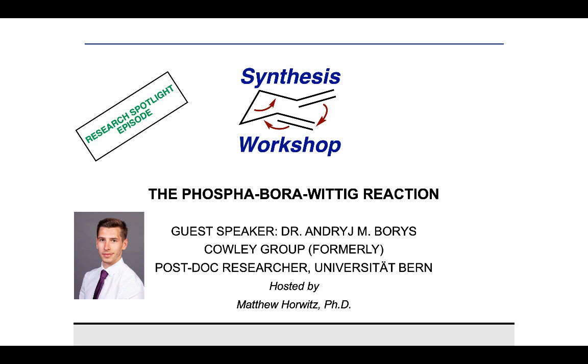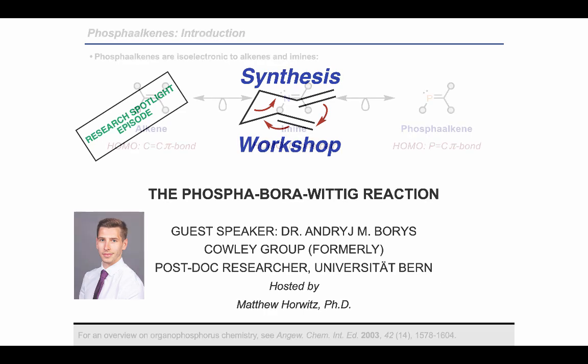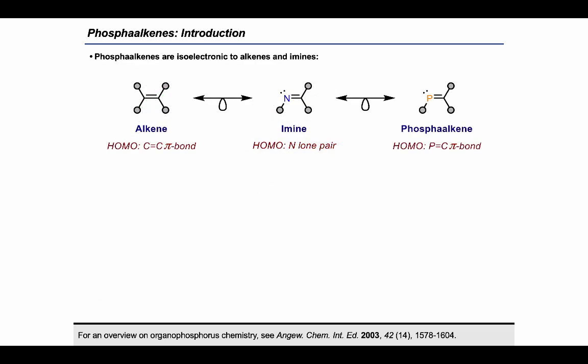Phosphoralkenes are compounds with phosphorus-carbon double bonds and these are isoelectronic to alkenes and imines. Unlike imines, in which the highest occupying molecular orbital is a nitrogen lone pair, the HOMO in phosphoralkenes is the P=C pi bond, meaning these are in fact more similar to alkenes.